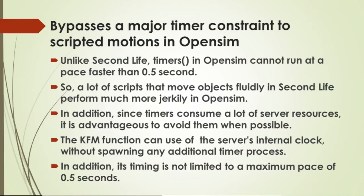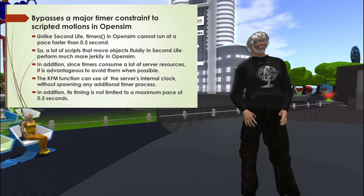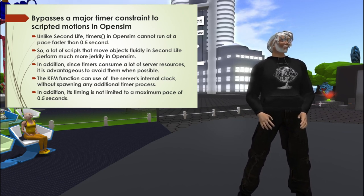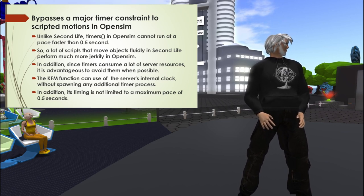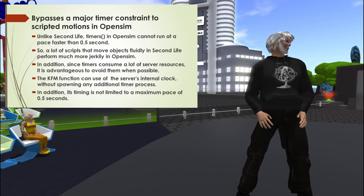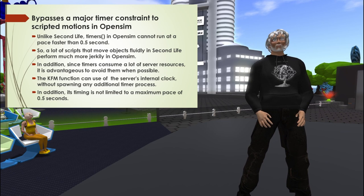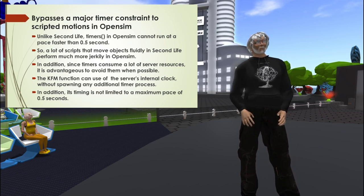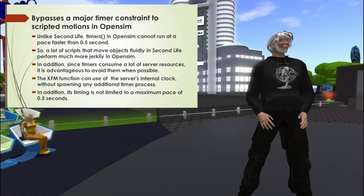One major advantage of keyframe motion is that it bypasses a major timer constraint in scripted motion in OpenSim. One problem in OpenSim for scripted movement is that the timer cannot run faster than half a second, so there are lots of scripts that move objects fluidly in Second Life but don't work well in OpenSim. Additionally, the keyframe function can use the server's internal clock without spawning any additional timer process — and the timing is not limited to half a second; it can go much, much faster.